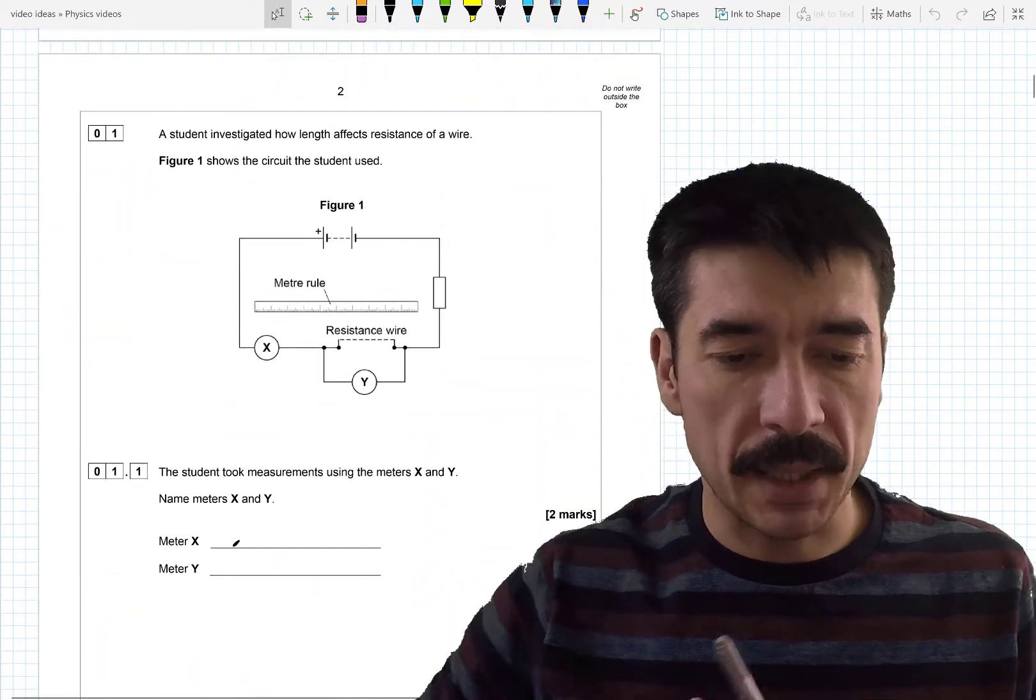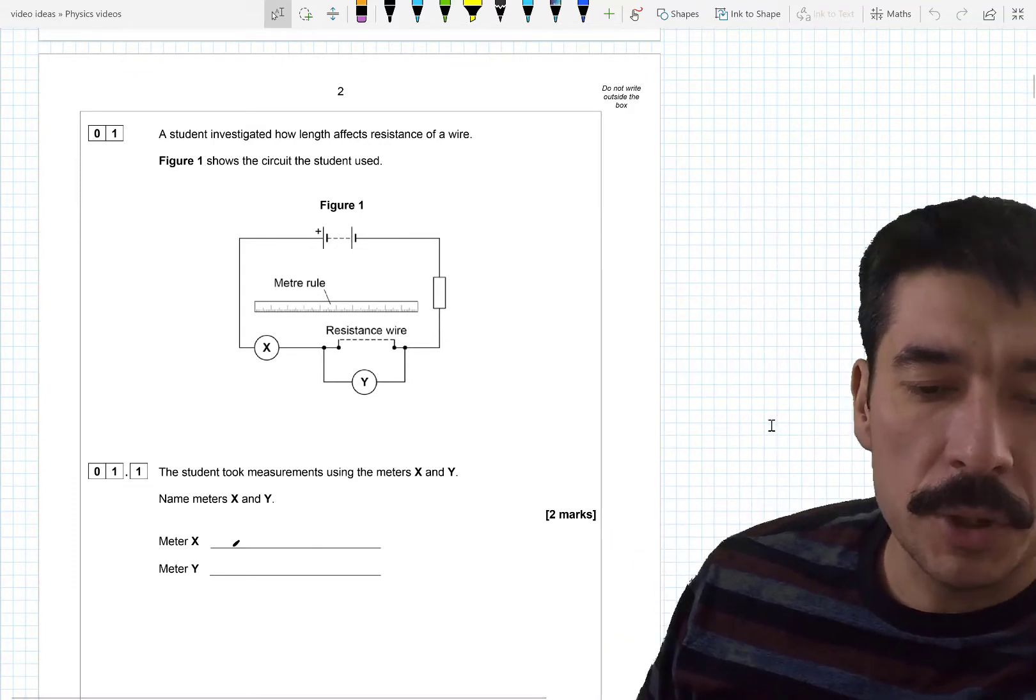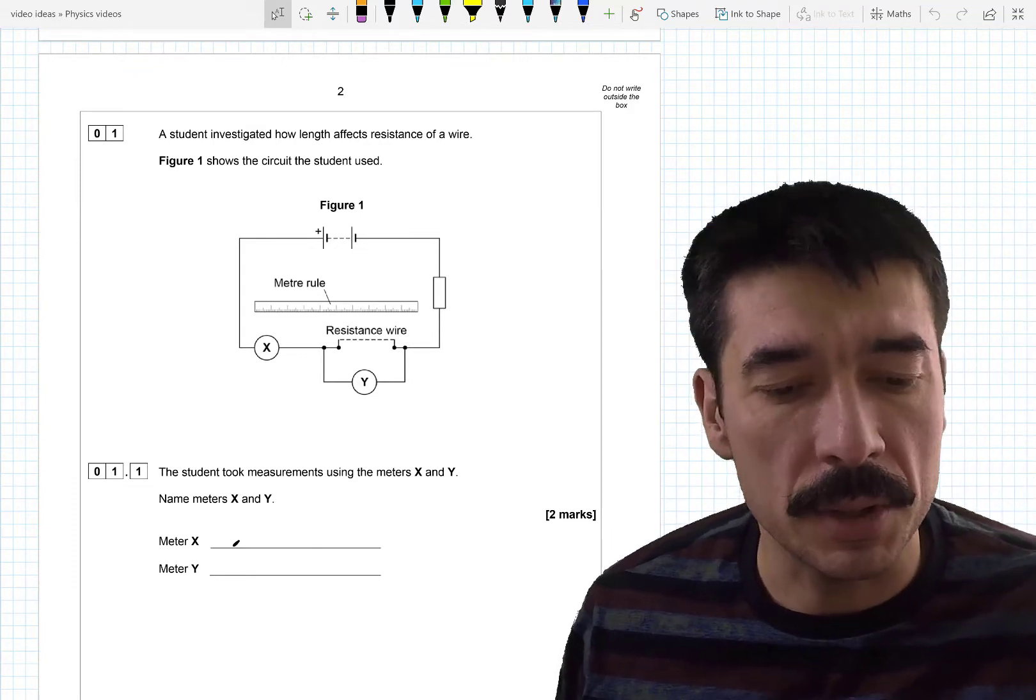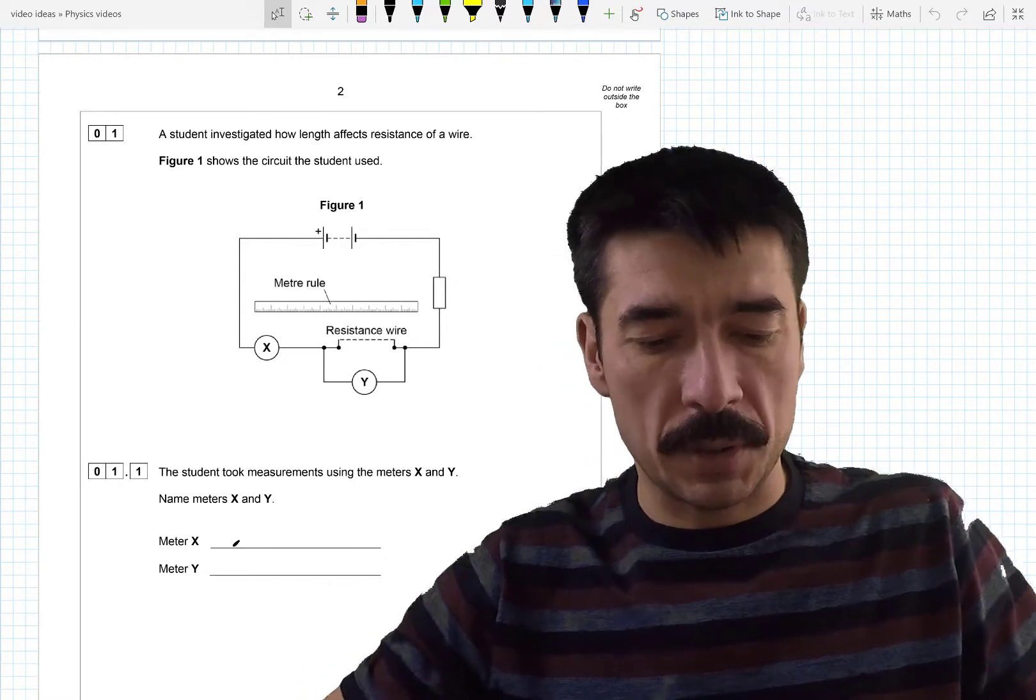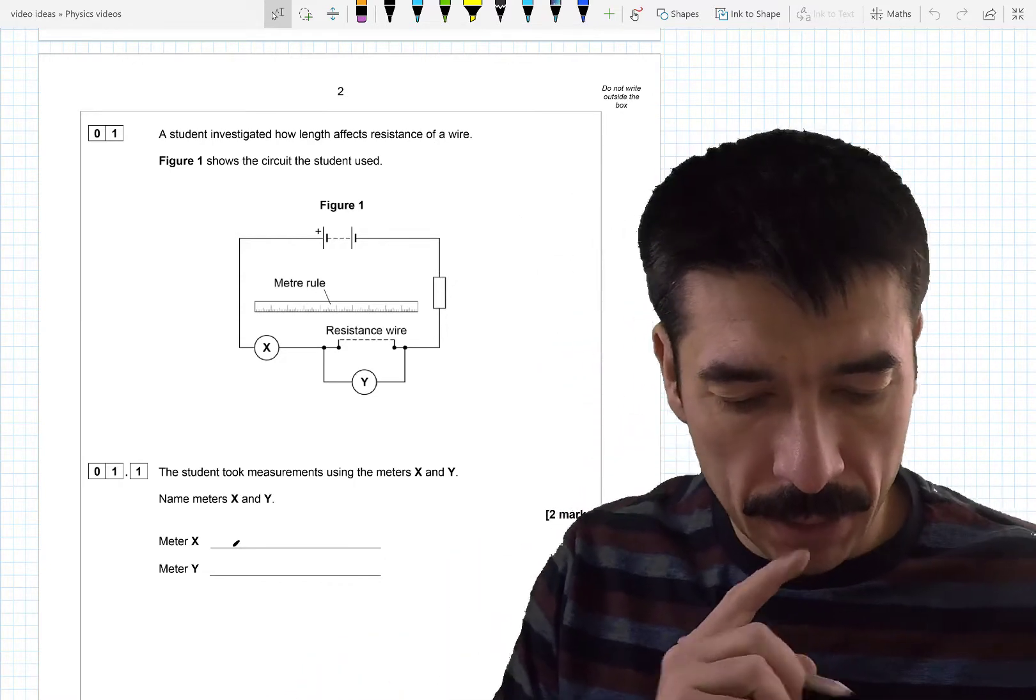A student investigates how length affects resistance of wire. Figure one shows the circuit the student used. Student took measurements using meters X and Y. Name the meters.